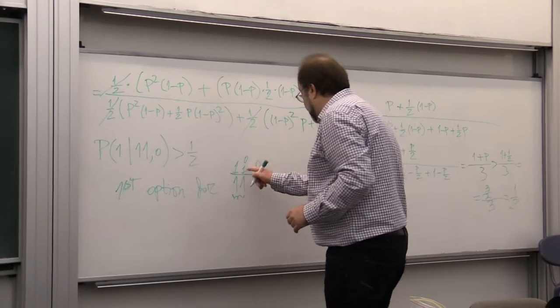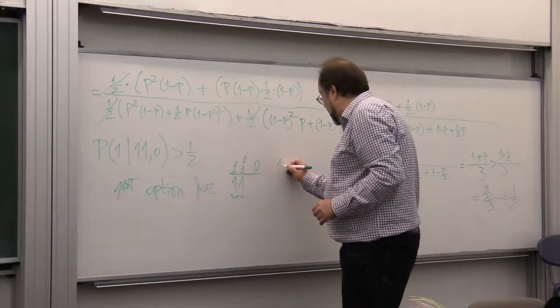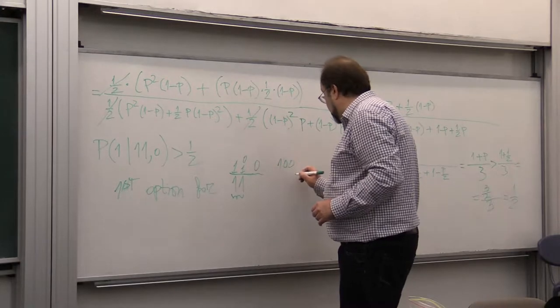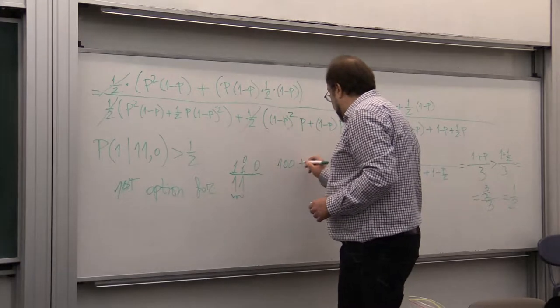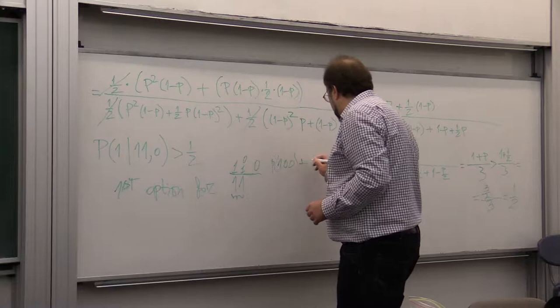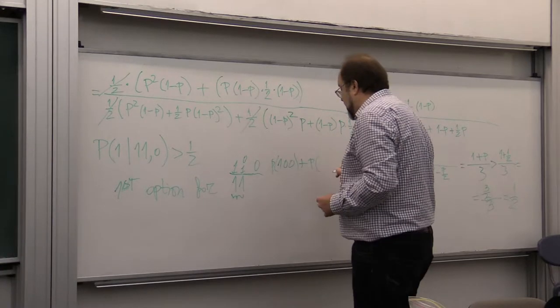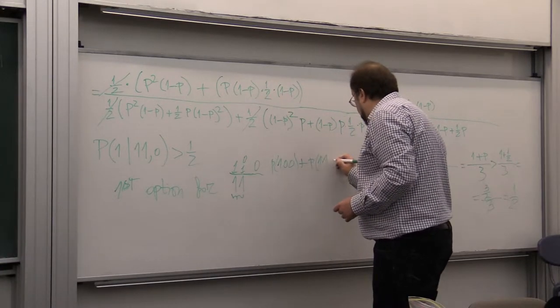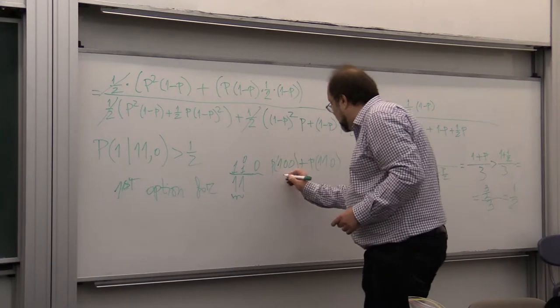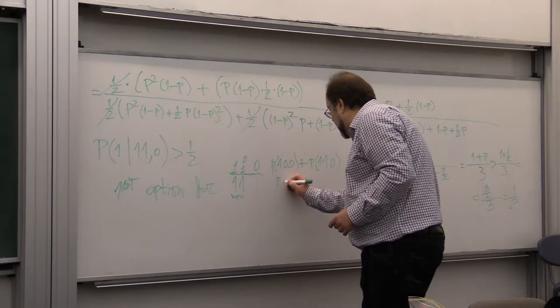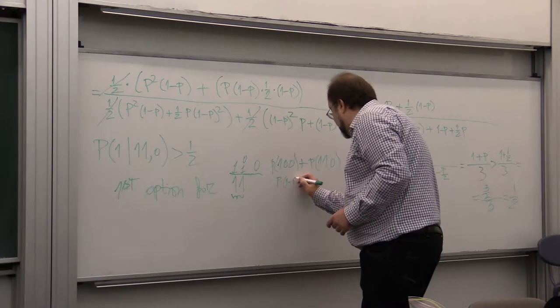One, zero, zero, plus probability, so probability one, one, zero, plus probability of one, one, zero. Right? So this is P times one minus P squared.